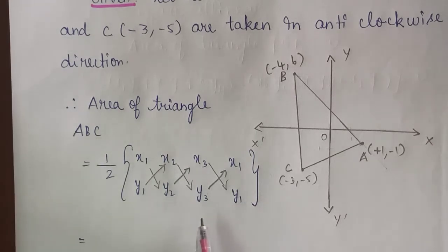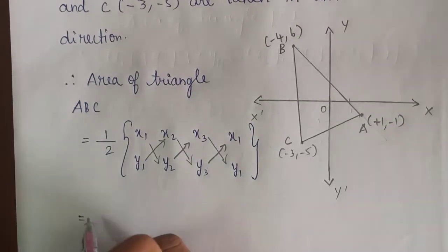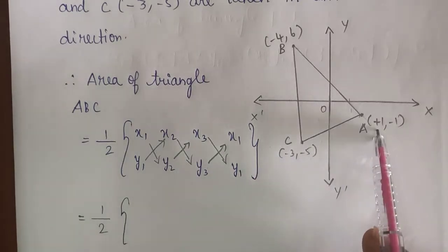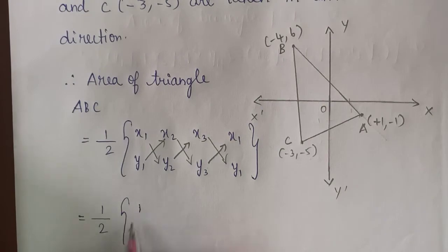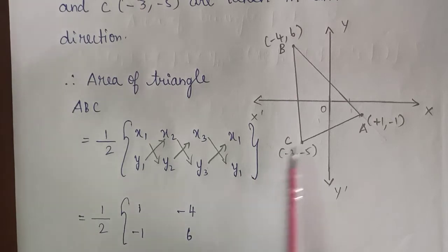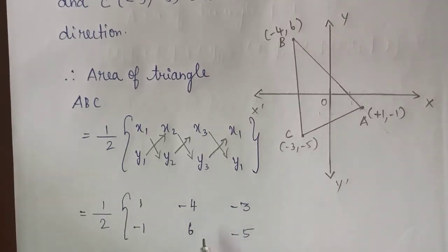This is an easy method to recall the formula. So it is nothing but (1/2) into: x1, y1 is A = (1, -1); x2, y2 is B = (-4, 6); x3, y3 is C = (-3, -5). Again you go with (1, -1).